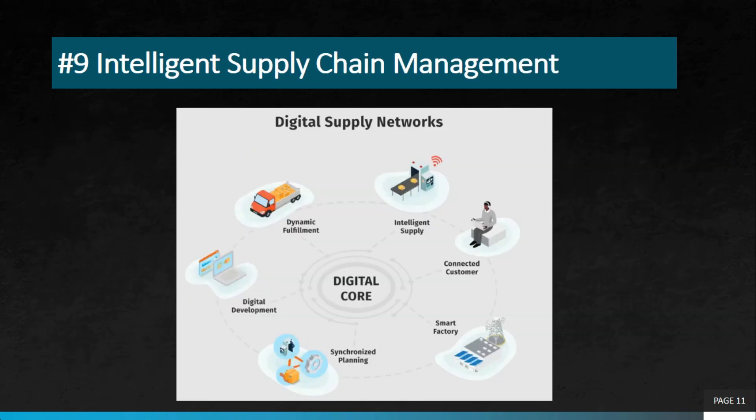The next project is intelligent supply chain management using ChatGPT. This project aims to use ChatGPT to analyze supply chain data and make intelligent predictions and recommendations for inventory management, supplier selection, and shipping logistics. By analyzing supply chain data and using machine learning algorithms, the model can help businesses optimize their supply chain operations.